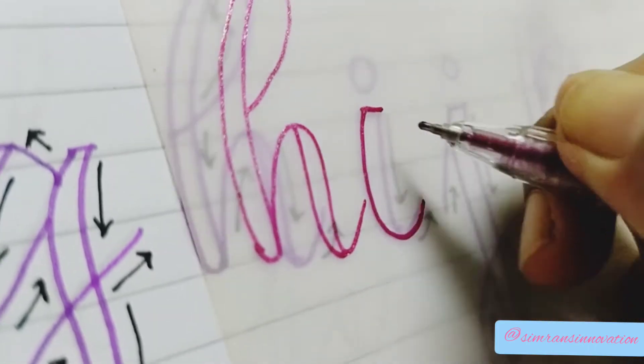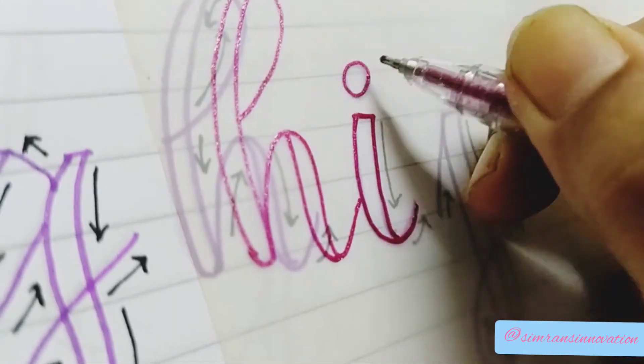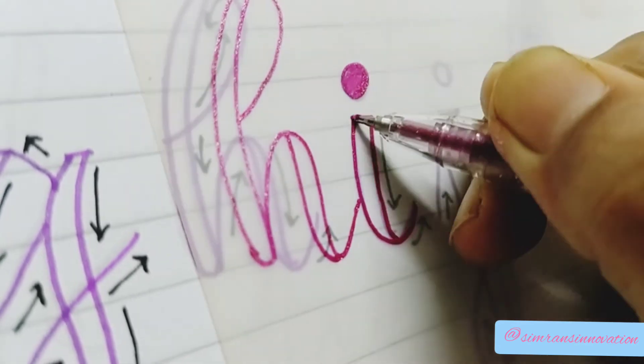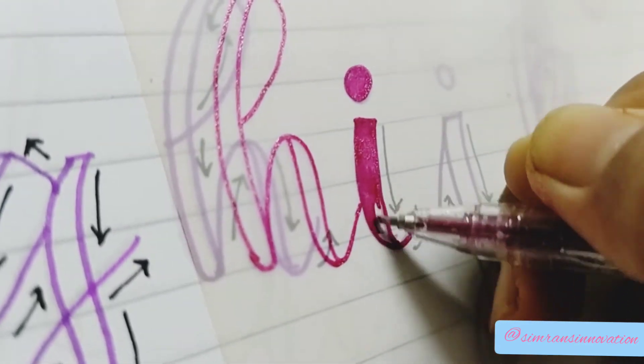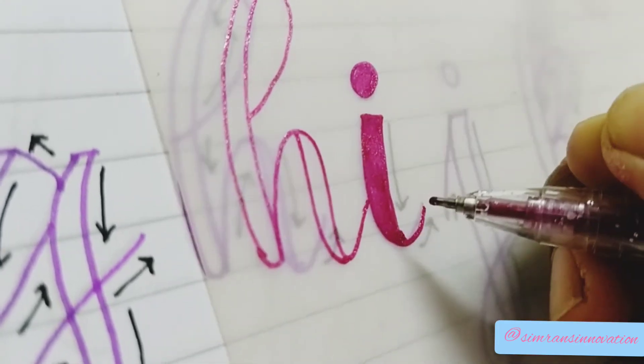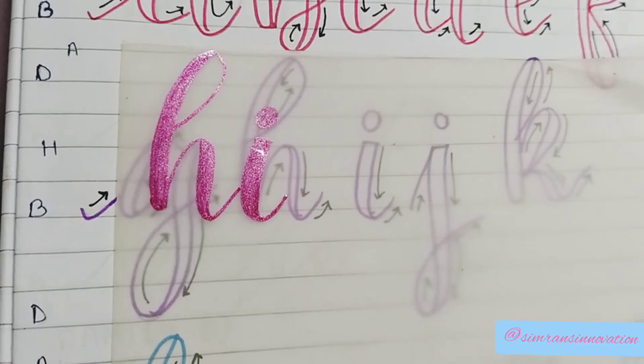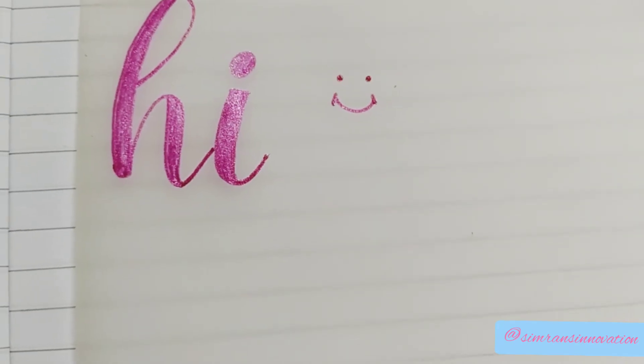Step number three: fill in the space between the downstroke lines. If you want, you can leave those spaces empty. Step number four: keep repeating steps two and three until your word is finished.